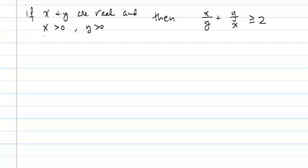The theorem we're trying to prove is that if x and y are real numbers and x and y are both greater than 0, then the ratio of x to y plus the ratio of y to x is greater than or equal to 2.